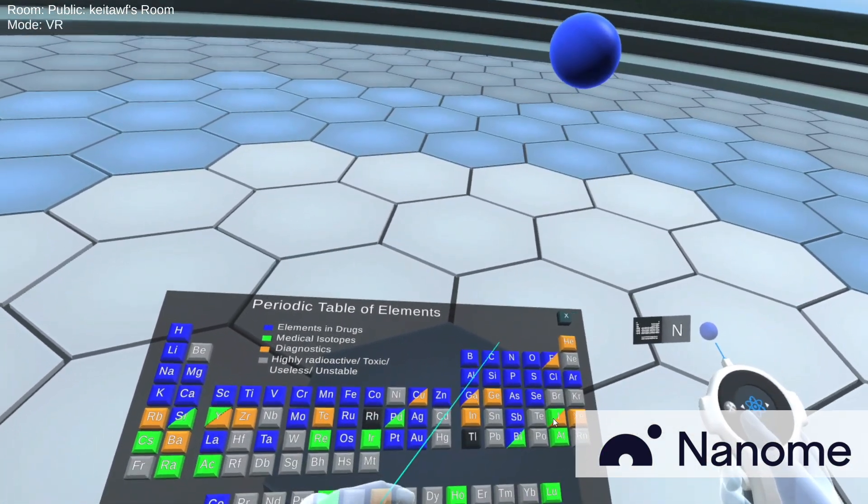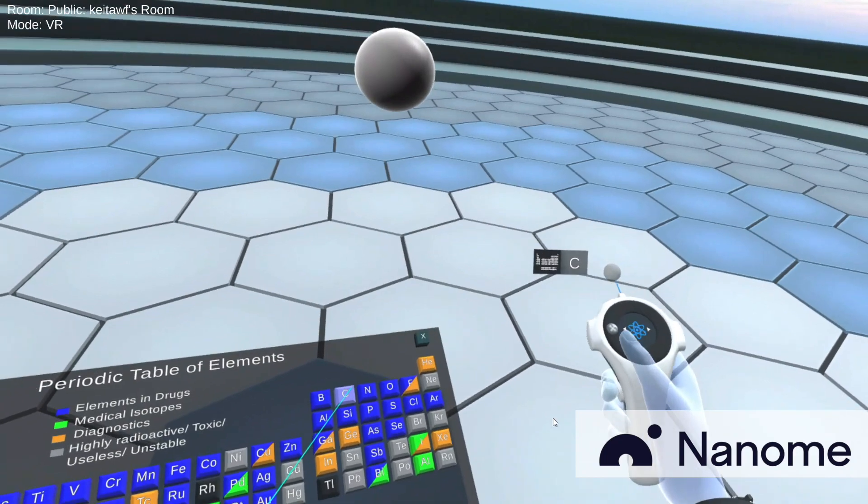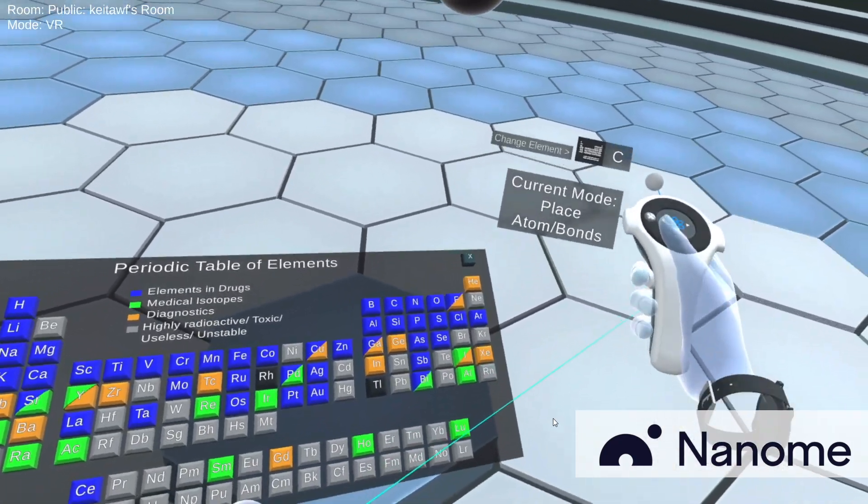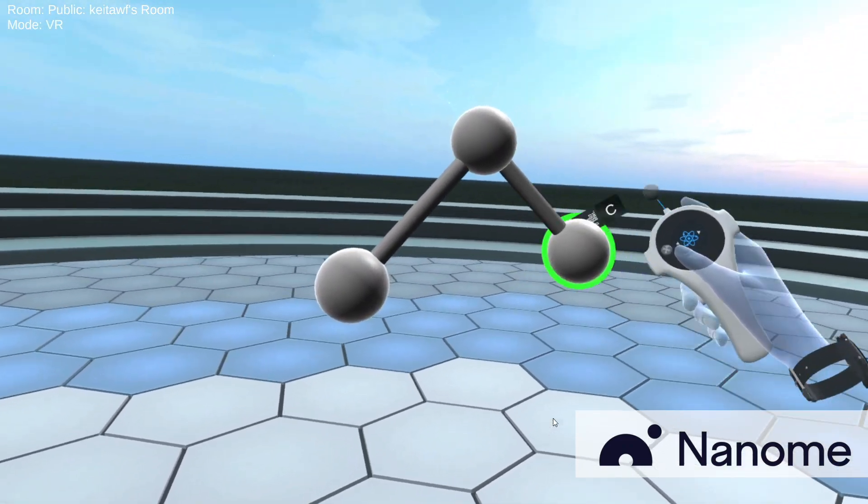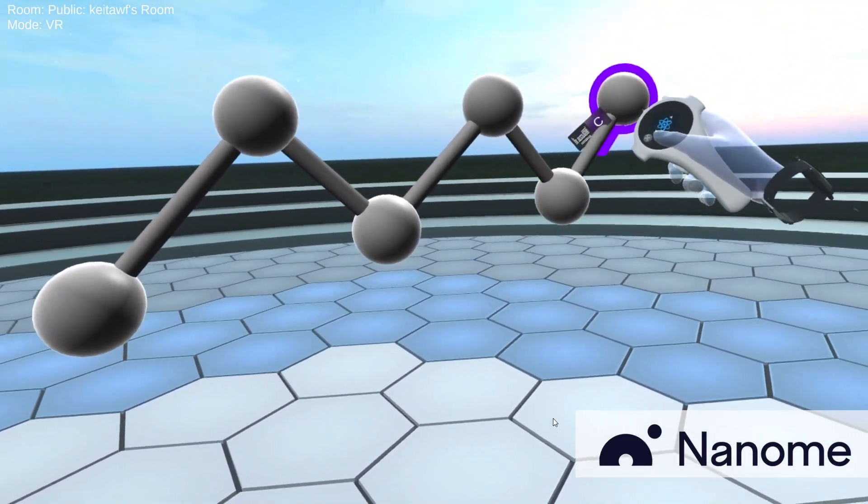And so let's say I want to start off with a carbon, I want to continue drawing, I want to use the place atoms and bonds. And I could draw a carbon chain just like that.